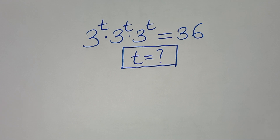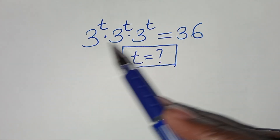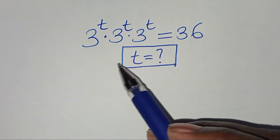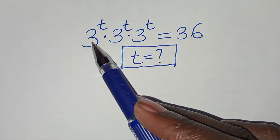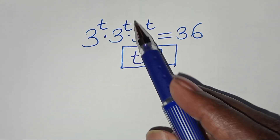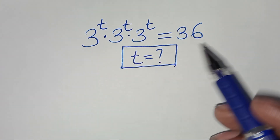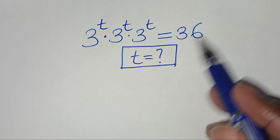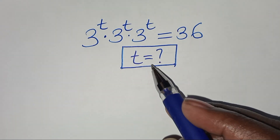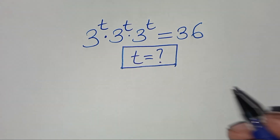Hello everyone, you are welcome to solve this nice exponential equation, which is 3 to power t times 3 to power t times 3 to power t, and this is equal to 36. So, what is the value of t?